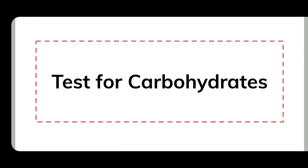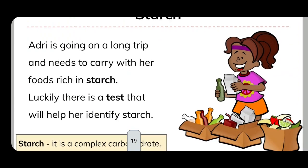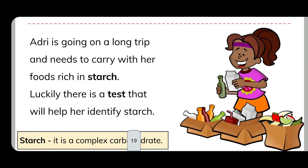Test for carbohydrates — specifically for starch. Starch is a complex carbohydrate. The story scenario: a character named Atree is going on a long trip and needs to carry food rich in starch. Luckily, there is a test that will help her identify starch.